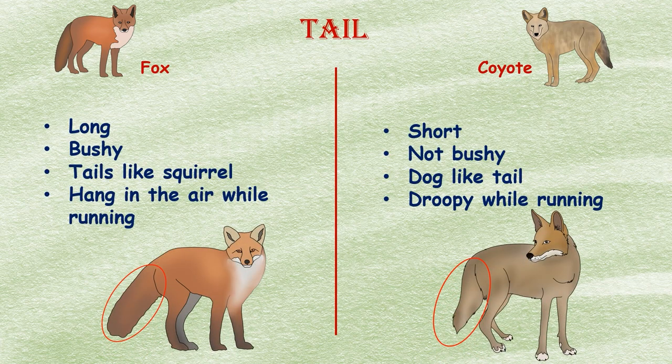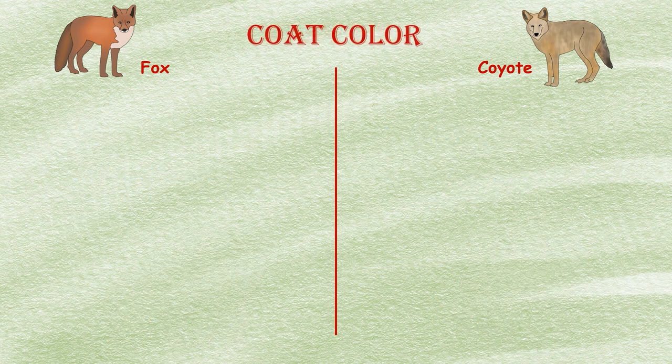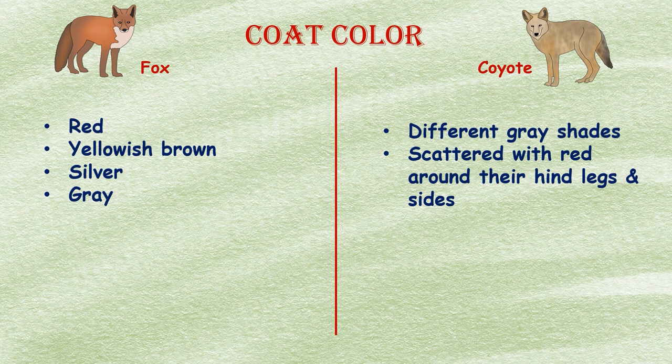The fox's tail is bushy and long, sometimes as long as its whole body length. Their tails are similar to a squirrel's and have the tendency to hang in the air when the fox runs. The coyote's tail is small compared to its total body size, is not bushy like that of a fox, and droops when it runs — the coyote's tail appears like that of a dog.